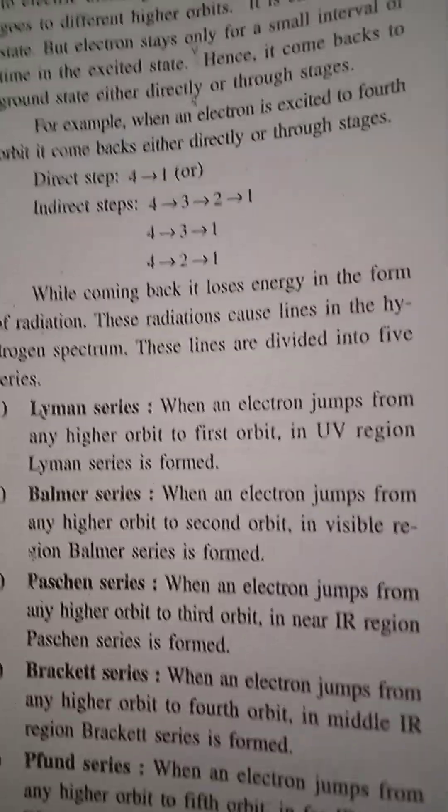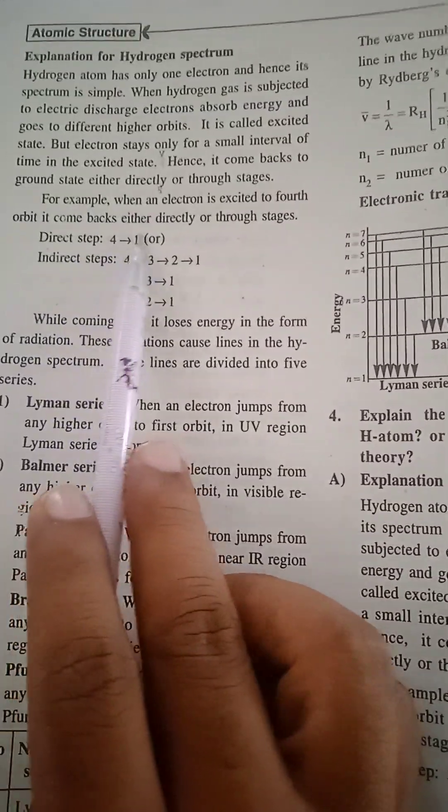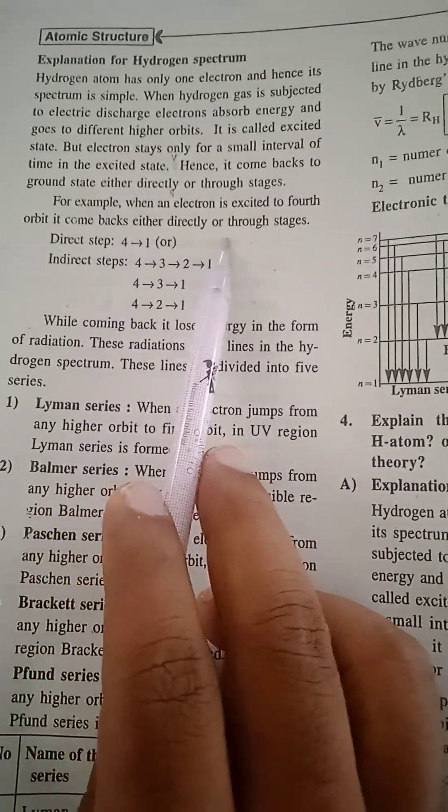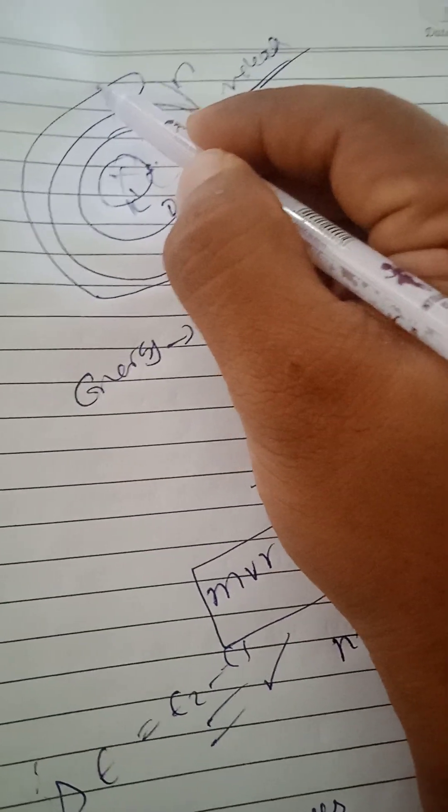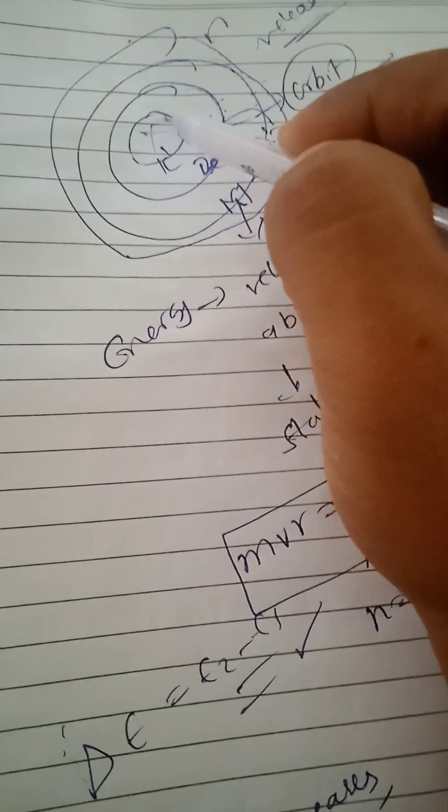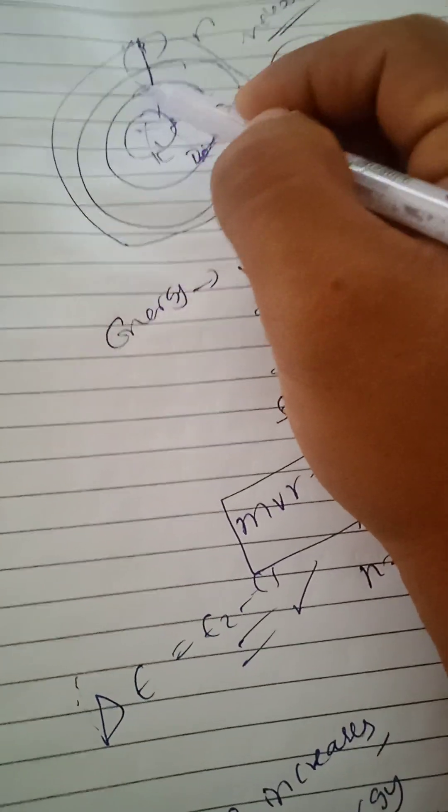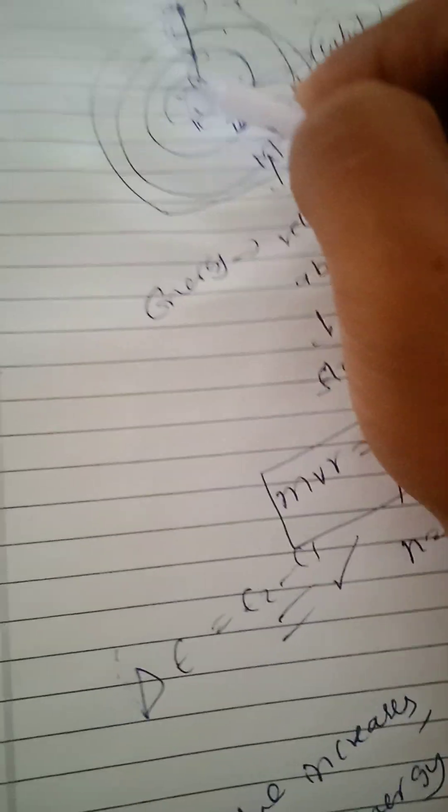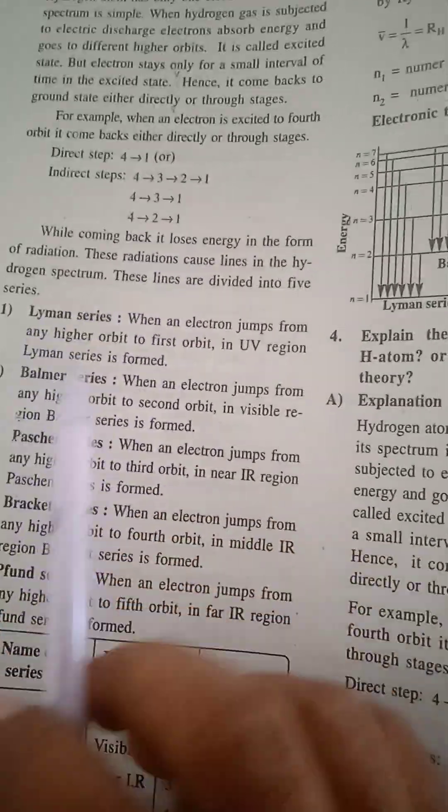Now, when an electron is excited to the 4th orbit, it comes back either directly or through stages. If there is a jump from the 5th orbit, there is a jump to the fourth orbit. If doing the first orbit, there is a jump from 4 to 3, 3 to 2, 2 to 1. Also, 4 to 3, 3 to second orbit, 2 to 1. Direct from the fourth orbit: 4 to 3, 3 to second, 2 to first. 4 to 3, 3 to first. 4 to second orbit, second to first orbit.